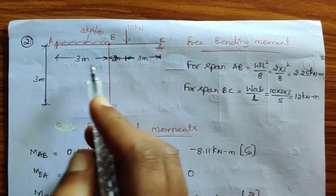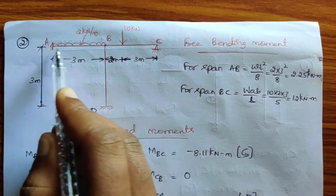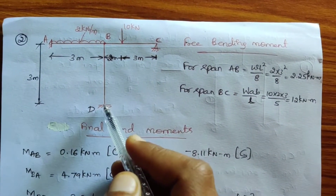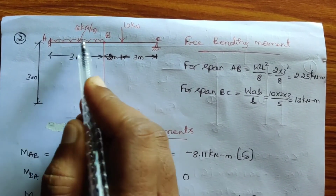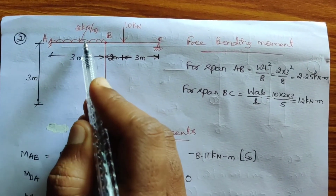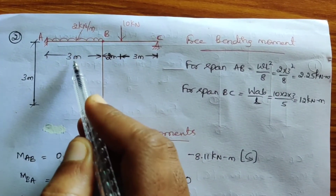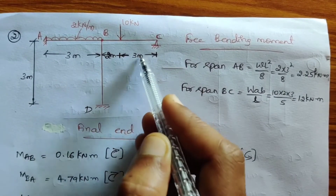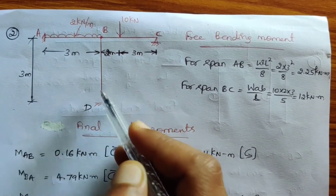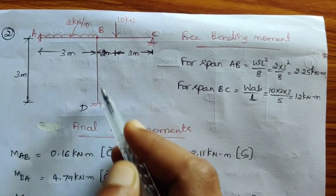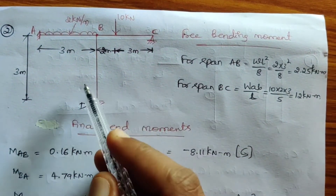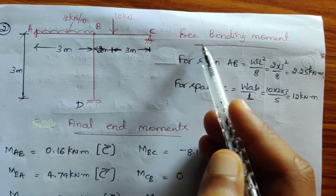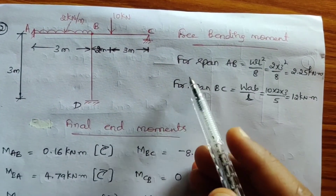This is the problem statement given. We have element AB, BC as the horizontal element, and BD as the vertical element. On span AB, a 2 kN per meter UDL is acting over a span of 3 meters. A 10 kN load is acting at 2 meters from point B and 3 meters from point C on span BC. No external load is acting on BD, and the height of BD is 3 meters. On the two spans with external loads, we need to calculate the free bending moment values.